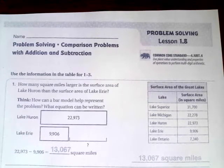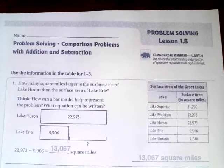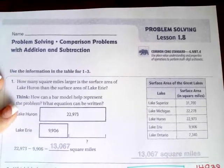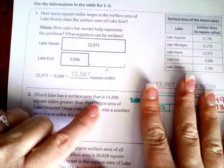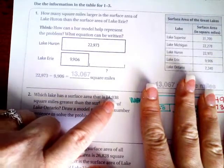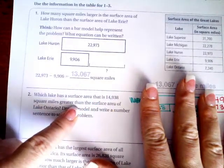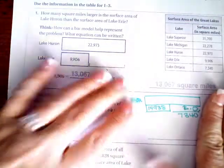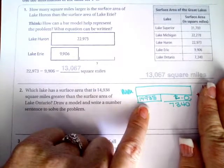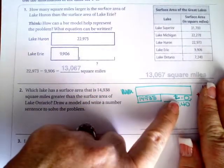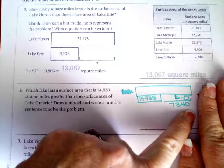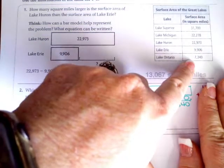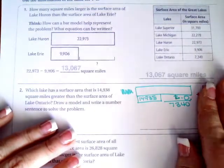Hi guys, welcome to fourth grade chapter one lesson eight. Let's go ahead and get started. Number one is done for you and these are the kind of charts that it wants you to draw. I went ahead down here and it says which lake has a surface area that is 14,938 square miles greater than the surface area of Lake Ontario. So here is the number that it wants us to add to it and Lake Ontario is 7,340.